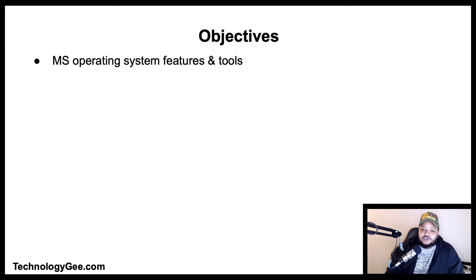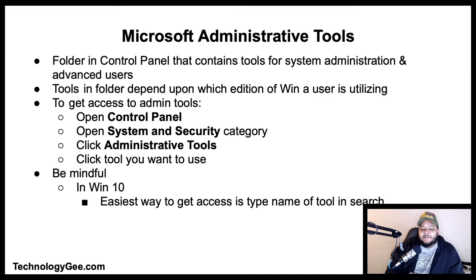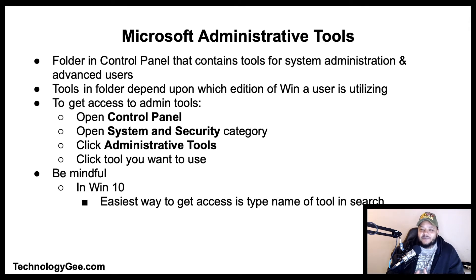Let's talk about the Microsoft Administrative Tools. Microsoft Administrative Tools is a folder in the Control Panel that contains tools for system administration and advanced users. The tools in the folder may vary depending upon which edition of Windows a user is utilizing. To get access to any of these administrative tools, you can open the Control Panel, open the Systems and Security category, and click the Administrative Tools button.